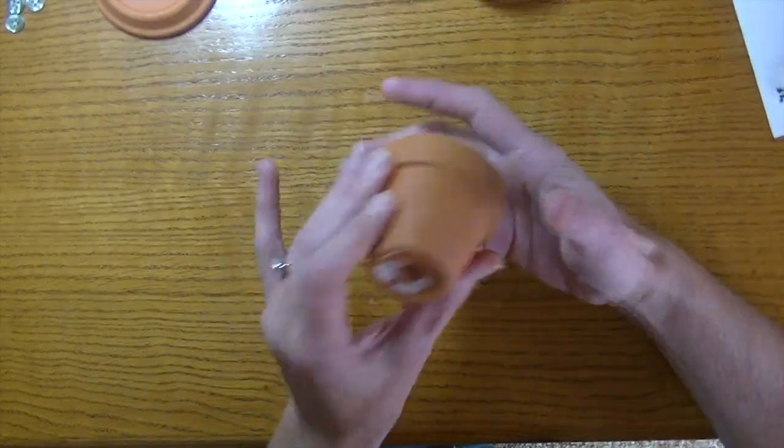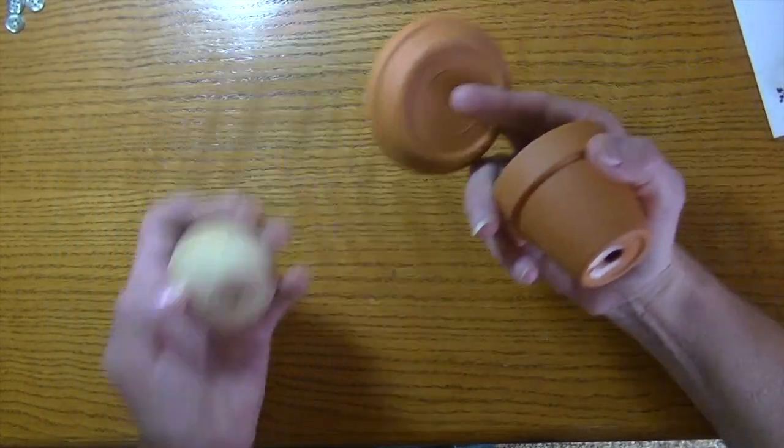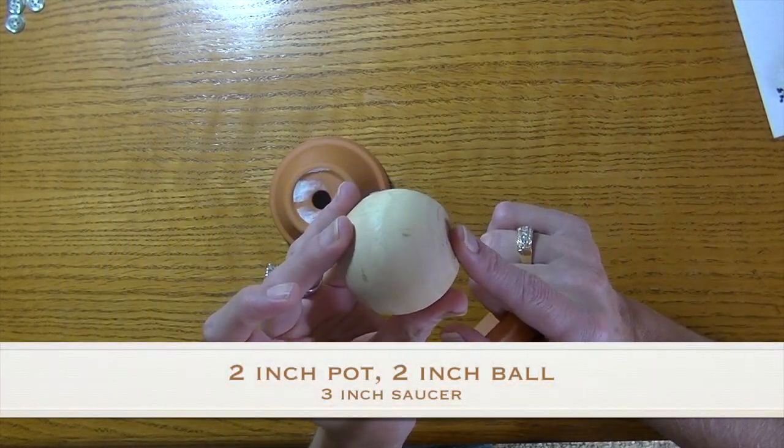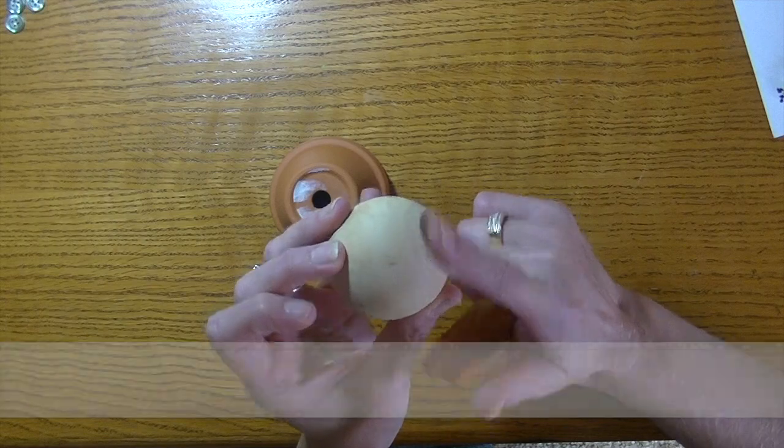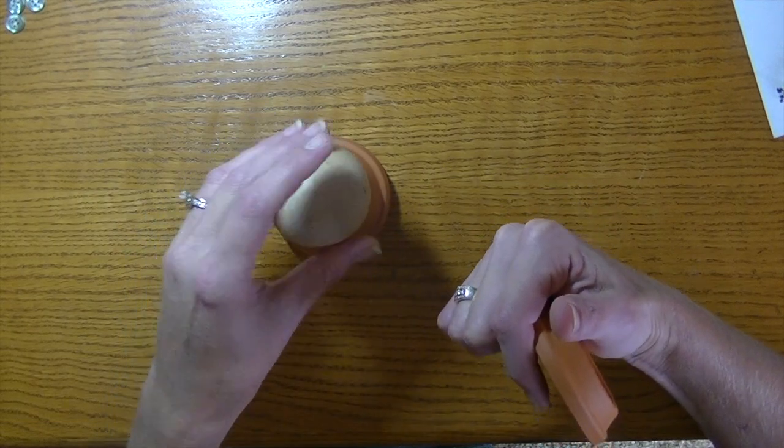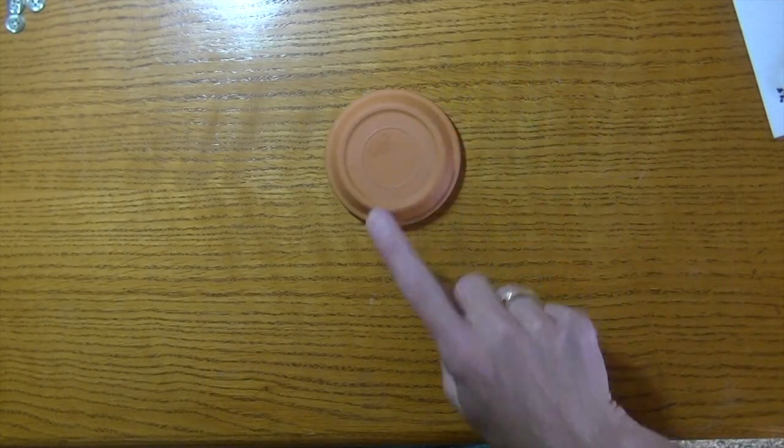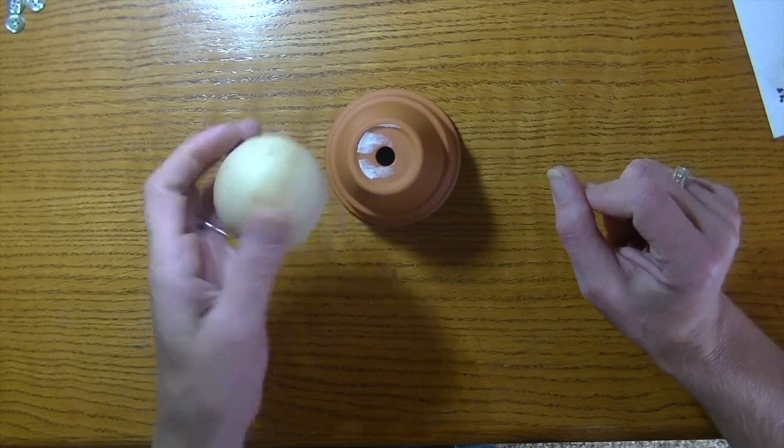All you need is a clay pot, a saucer, and a wooden ball. I believe my clay pot is 2 inches. The wooden ball is also 2 inches, but it has a flat side so it's able to sit on the pot like that. Then a little saucer and you're going to layer that down with the saucer, the pot, and the ball.